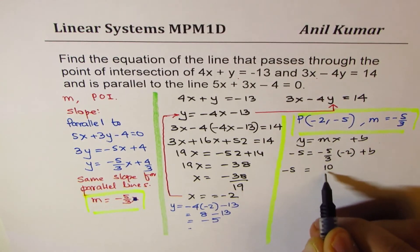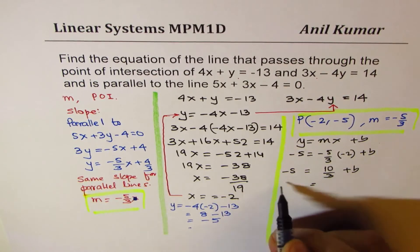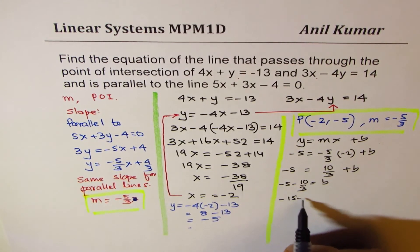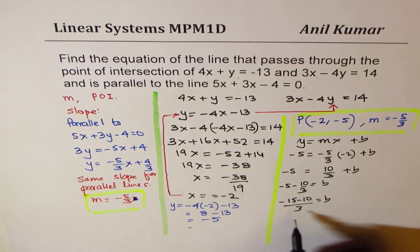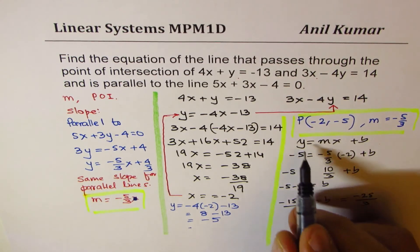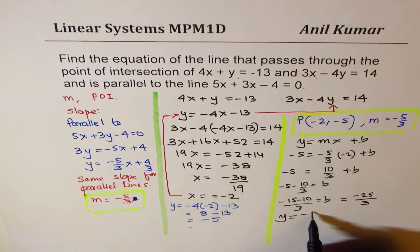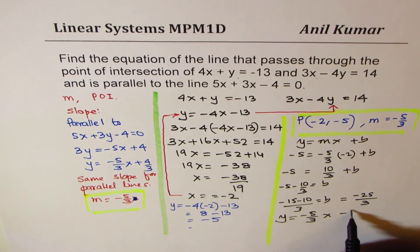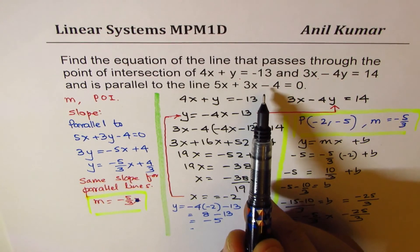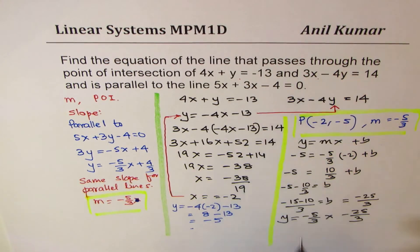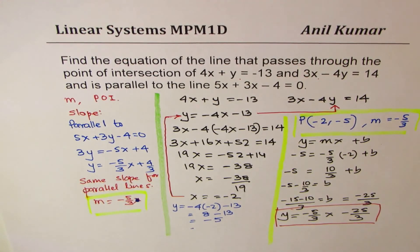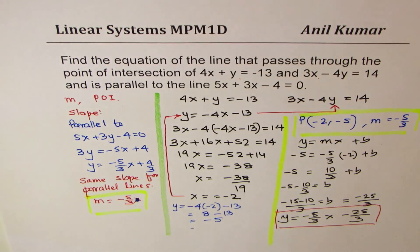Bringing 10/3 to the left side: -5 - 10/3 = b. Taking the common denominator gives -15/3 - 10/3, so b = -25/3. Therefore the equation is y = -5/3 x - 25/3. You find the slope from the parallel line and the point from the two intersecting lines, then use y = mx + b to get your answer. I hope the steps are very clear — go through them once again, feel free to share your comments, thanks for watching, and all the best.